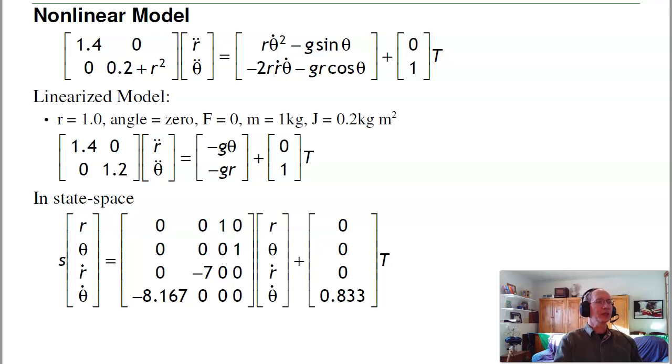To come up with a linear model, I need the linear model to do eigenvalues and eigenvectors. I'll linearize about some operating point. The dynamics change depending upon r. Let's assume my set point is at 1 meter, angle 0, force 0, mass 1 kg, J = 0.2 kg·m². Here's my dynamics. Solving, that's my linear model. The first two rows: the derivative of r is the third state, derivative of θ is the fourth state. Derivative of r is r̈. Dividing by 1.4 gives -7θ. Dividing by 1.2, θ̈ = -8.167r + 0.833τ.